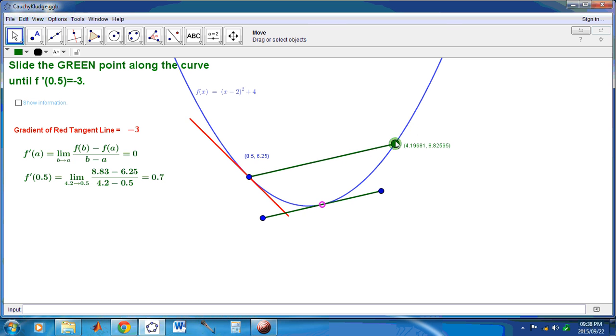So really, we're taking this difference quotient here, as you can see, this 8.83 minus 6.25 divided by 4.2 minus 0.5. And that difference quotient is really what ends up being the determining factor for the slope of the red tangent line. There are a lot of problems with mainstream calculus. It's flawed for several reasons, as I'll explain shortly.